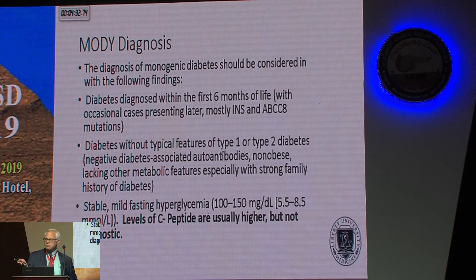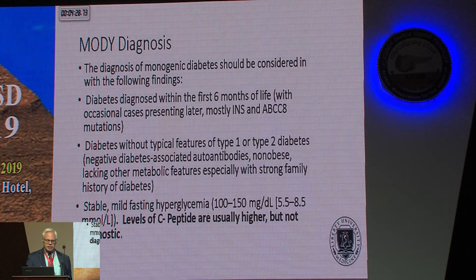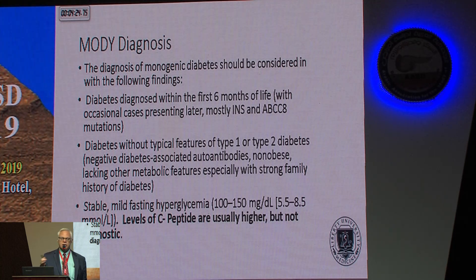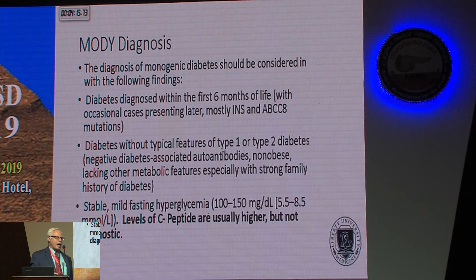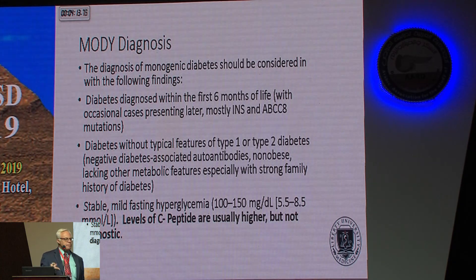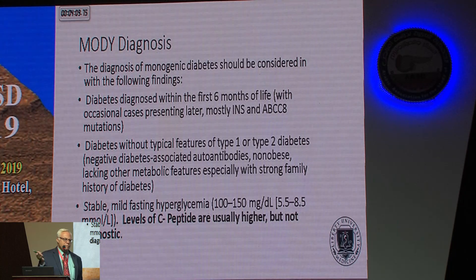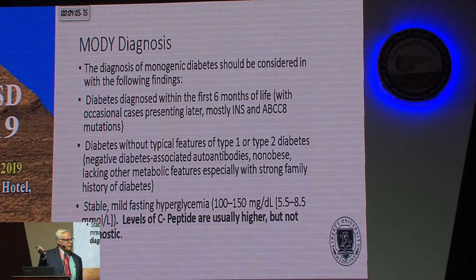The same is true with MODY — maturity onset diabetes of youth — because MODY really needs C-peptide to be present. These are kids who present with a more type 2-like diabetes, generally with stable hyperglycemia, and their C-peptide levels are a little bit higher. But again there's a lot of variability. So C-peptide levels really don't help us diagnose type 1, type 2, MODY, or LADA.